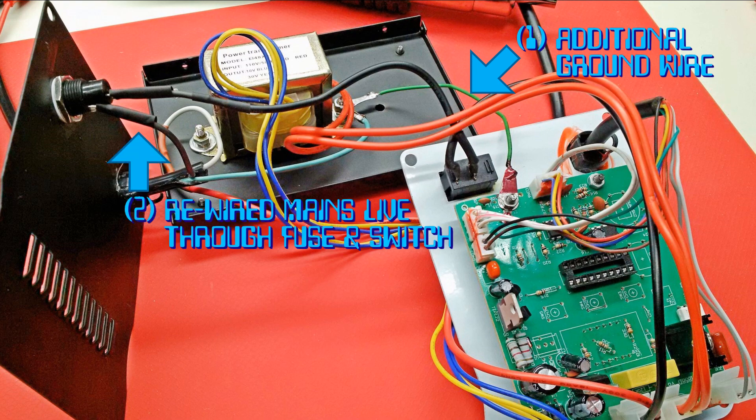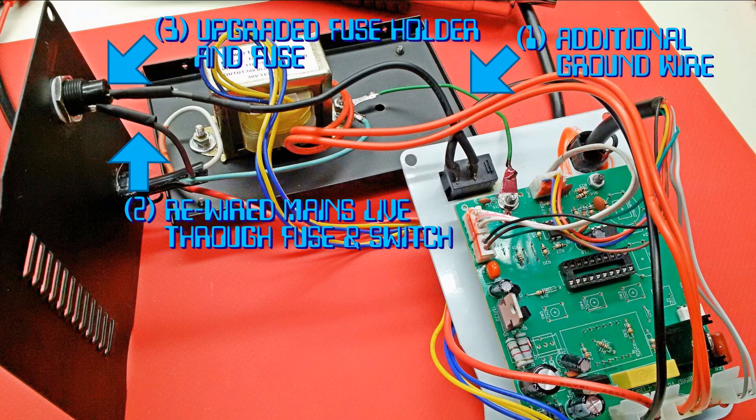Secondly, the live mains wire was rerouted through the fuse and the switch. So now, if the fuse were to blow, the PCB and chassis beyond this point would no longer be a shock hazard. And third, an optional modification, although mandatory for me because mine broke when inspecting the fuse, upgrading the fuse holder to a higher quality one and replacing the fuse with a name brand fuse.